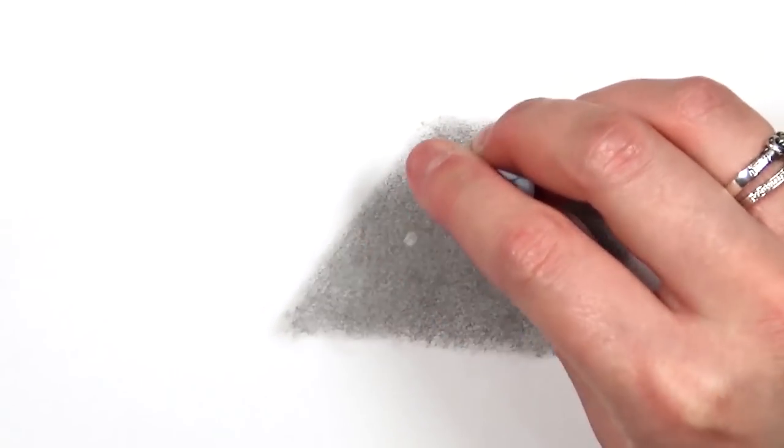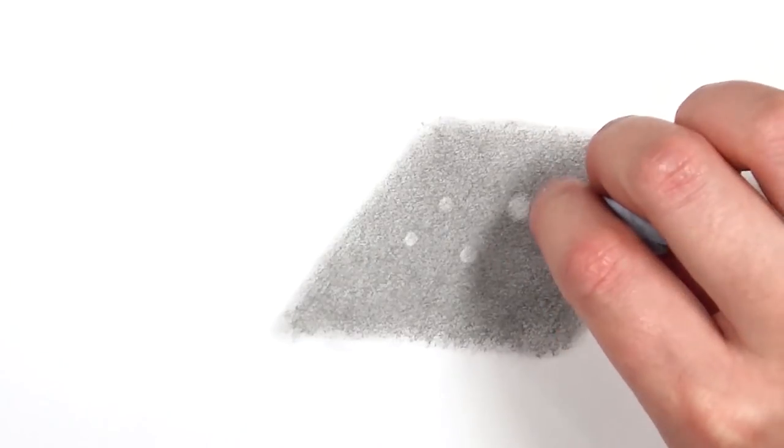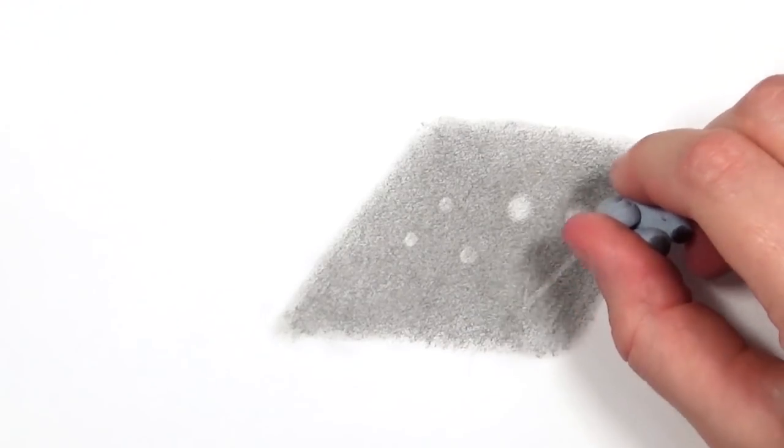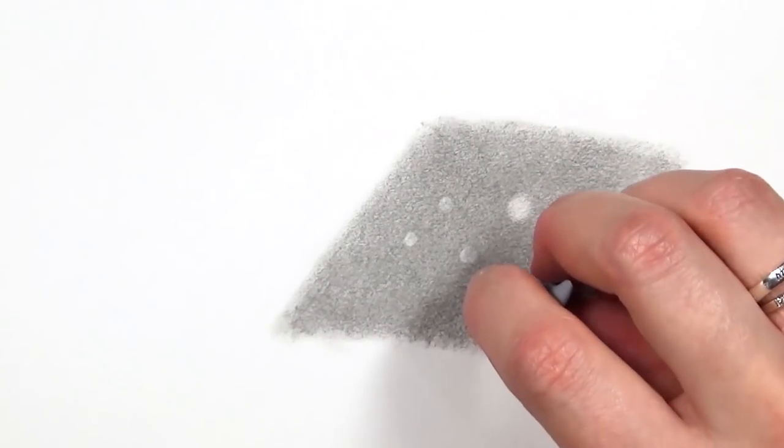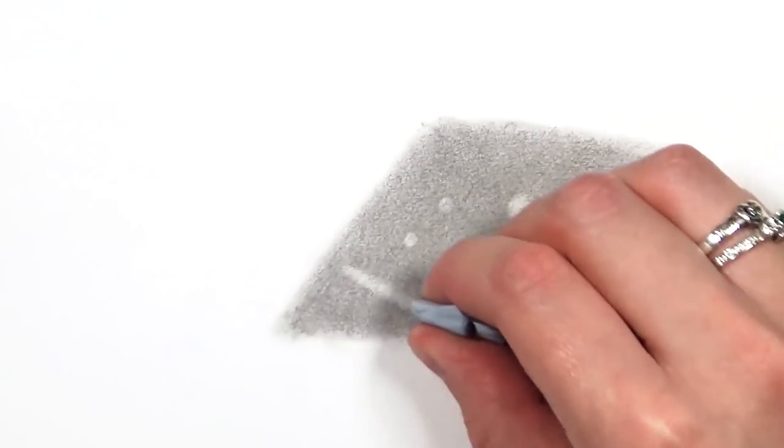When I do my outline for my sketches I like to go in with a bit of blue tack and just lift the extra graphite off the paper. You can also use it to create highlights and also erase the pencil completely. It won't be able to erase a really dark pencil, but if your pencil is quite light then it'll be able to erase it completely. You can really easily create highlights with it because you can mold it into specific shapes.